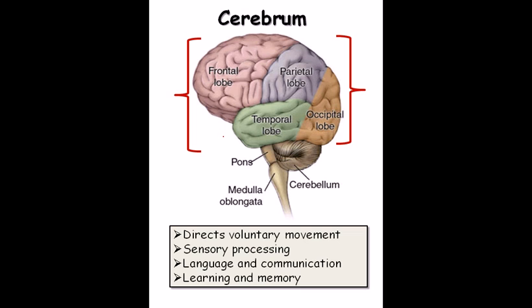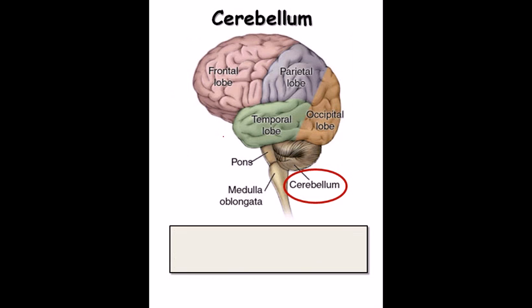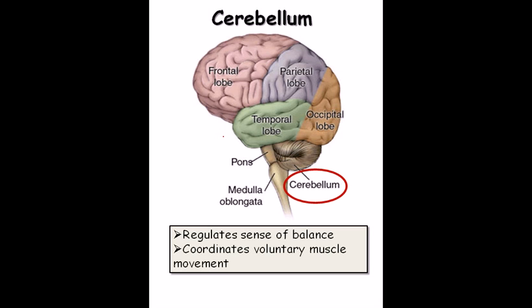These lobes in the cerebrum also deal with learning and memory. The cerebellum is a smaller part attached to the cerebrum. It regulates the sense of balance and coordinates voluntary muscle movement. Coordination is crucial — for example, walking requires coordination between your hand movement and your leg movement. This coordination is regulated by the cerebellum.